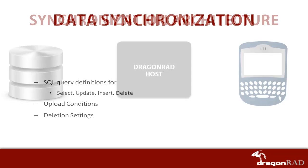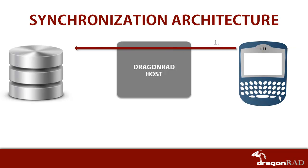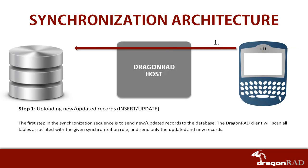The synchronization sequence can be broken down into four phases. The first step is uploading new and updated records from the mobile device to the database. This involves the Dragonrad client scanning all tables associated with the given synchronization rule and sending the updated and new records to the Dragonrad host.